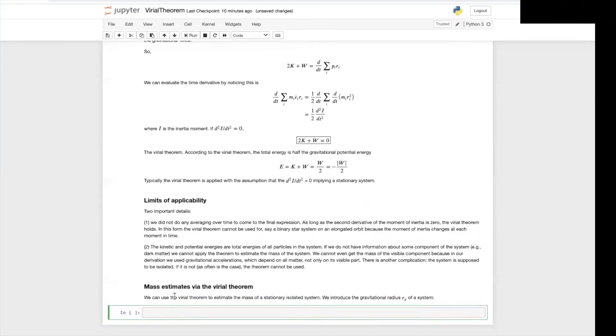So let's see mass estimates via the Virial theorem. We can use the Virial theorem to estimate the mass of a stationary isolated system. If we introduce the gravitational radius of this system, the gravitational radius is the equivalent radius that would give you the gravitational potential energy of the system.